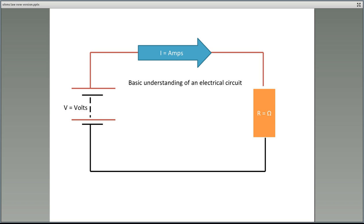Now just a basic understanding of our electrical circuit. V, which is our voltage, is known as our electrical pressure. I is our flow. And R is the resistance, or the opposition to flow.